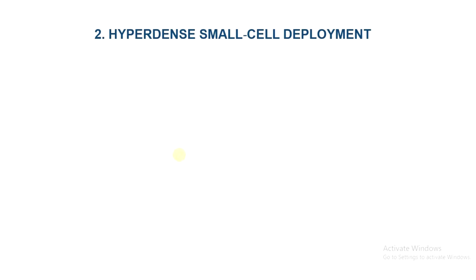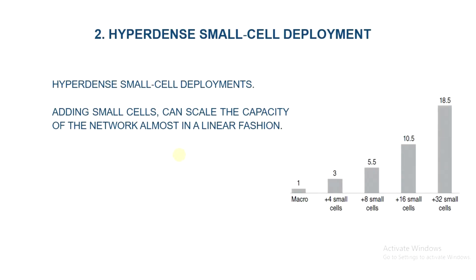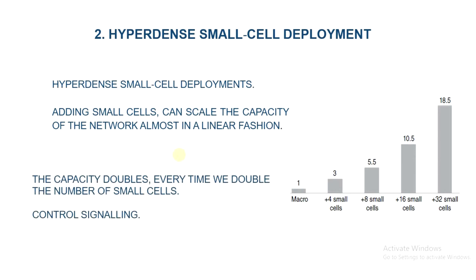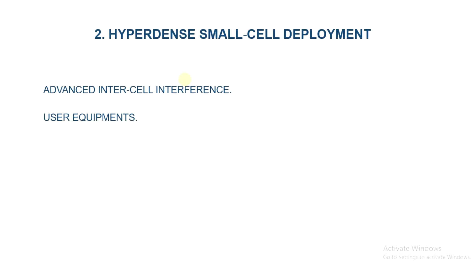Qualcomm is a leading company in addressing the thousand-times capacity challenge through Hyperdense Small Cell Deployment, and has demonstrated that adding small cells can scale the capacity of the network almost in a linear fashion — that is, capacity doubles every time we double the number of cells. However, reducing cell size increases inter-cell interference and the required control signaling. To overcome this drawback, advanced inter-cell interference management techniques are needed at the system level, along with complementary interference cancellation techniques at the user equipment.